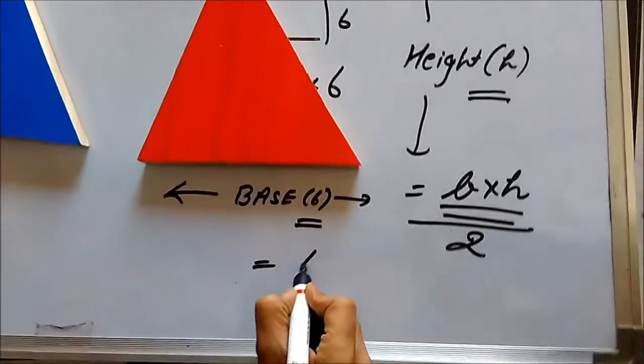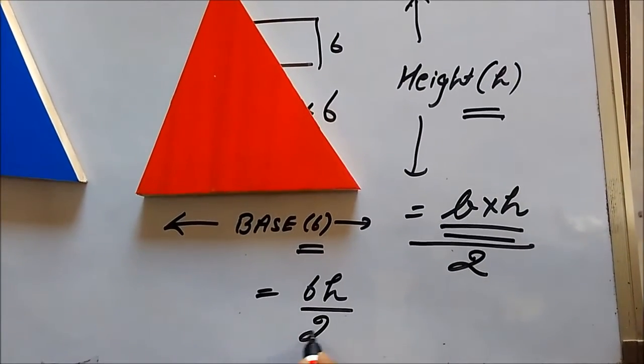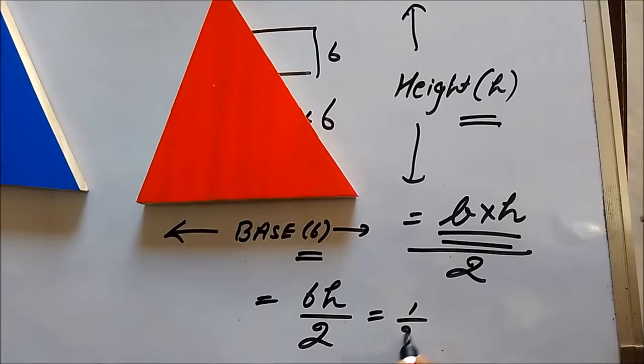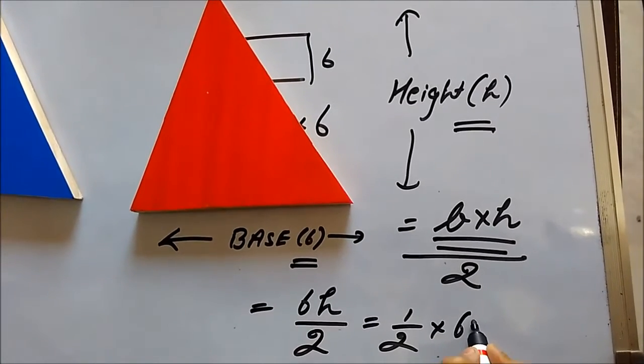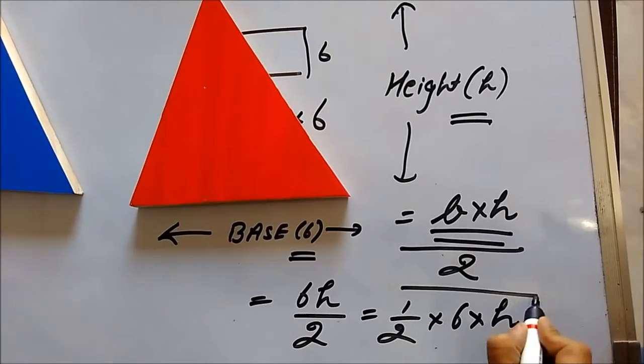So what we get is BH by 2, or half into base of the triangle into the height of the triangle. This is the simplest way we can derive the area of a triangle.